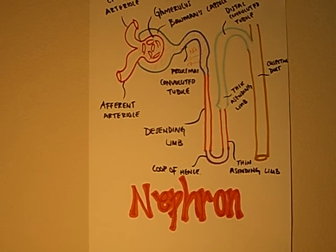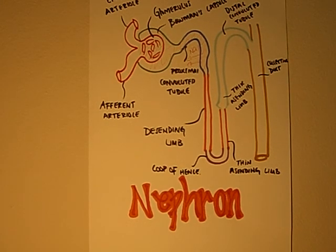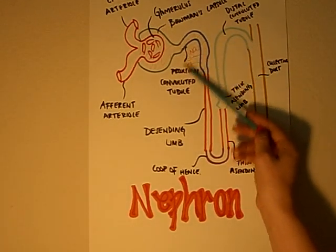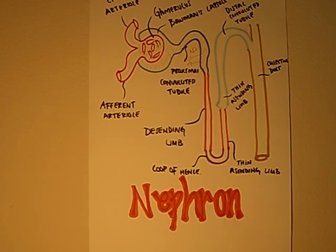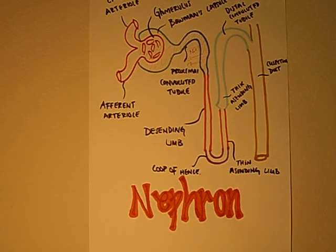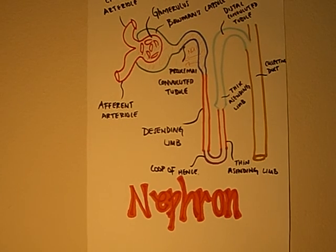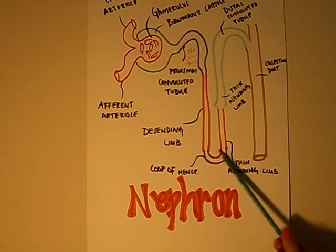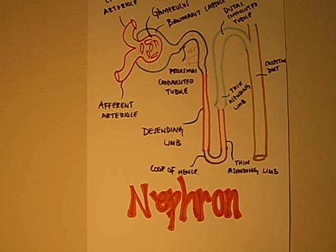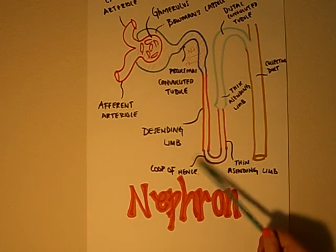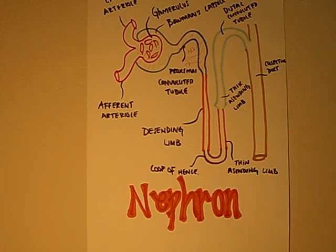Even though a large volume of water and solutes leaves the proximal convoluted tubule, the overall concentration of the fluid that enters the loop of Henle is similar to that of blood plasma, although its composition is quite different. The ability of the kidney to produce urine that is hypertonic to the blood plasma is due to the loop of Henle. The loop of Henle does not concentrate the urine directly; rather, it functions like a countercurrent multiplier, creating a concentration gradient in the surrounding medulla.